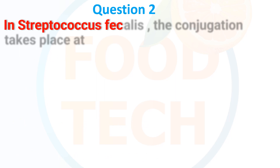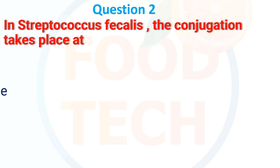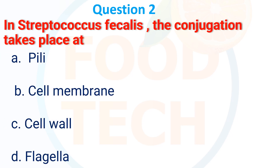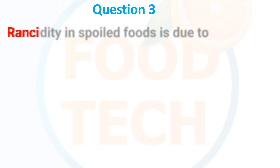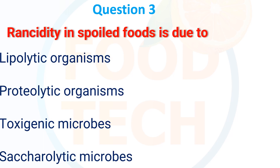In Streptococcus faecalis, the conjugation takes place at: A. Pili, B. Cell membrane, C. Cell wall, D. Flagella. The answer is C: Cell wall.